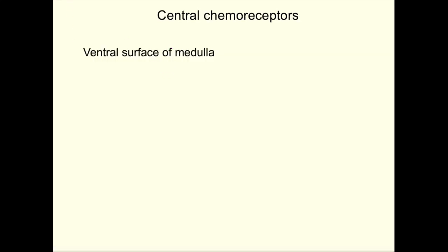Moving to central chemoreceptors: peripheral chemoreceptors respond mainly to oxygen, while central chemoreceptors do not respond to oxygen — they respond mainly to carbon dioxide. Central chemoreceptors are present on the ventral surface of the medulla. How do they respond to partial pressure of carbon dioxide?